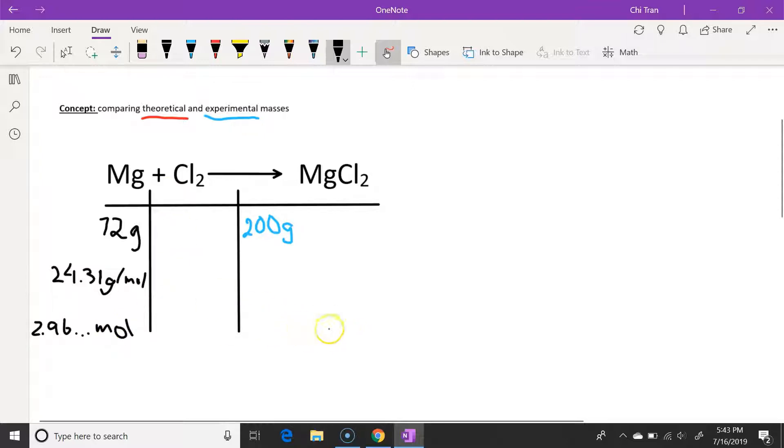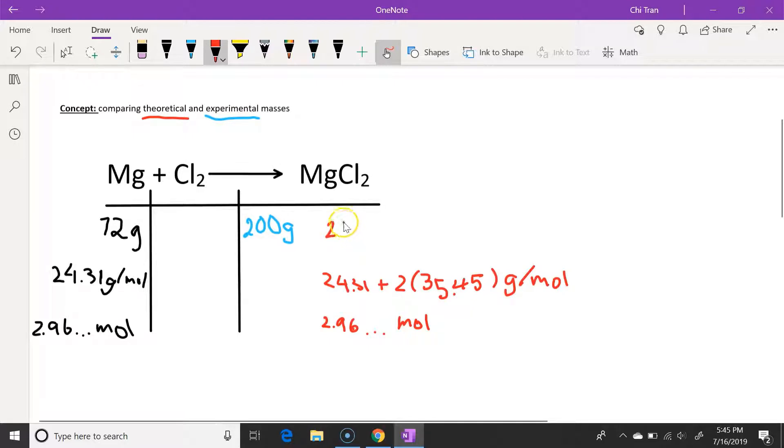The molar ratio of magnesium and magnesium chloride is 1 to 1. So the theoretical number of moles would be the same. So we would get 2.96 etc. moles. And the molar mass would be the molar mass of magnesium plus two times the molar mass of chloride. And then we can take the number of moles times the molar mass to get the mass.